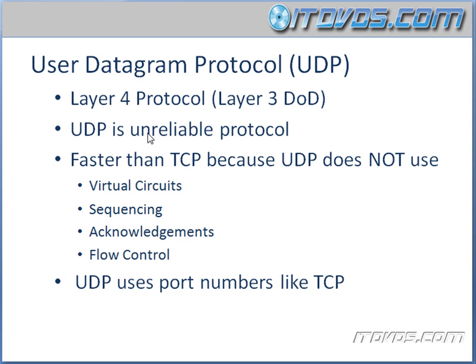UDP is an unreliable protocol, whereas TCP is a reliable protocol. Basically, it doesn't use anything that TCP uses to be reliable. But UDP is faster than TCP because UDP does not use virtual circuits, sequencing, acknowledgments, and flow control. It doesn't use any of that.